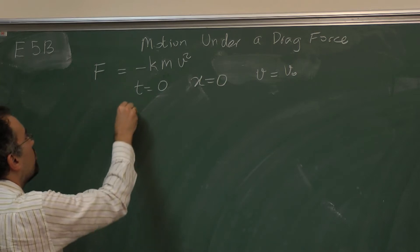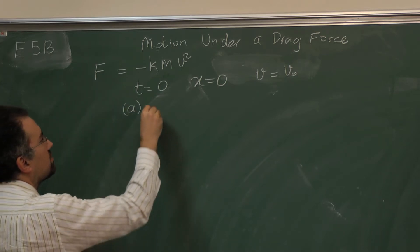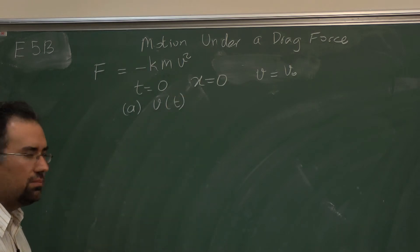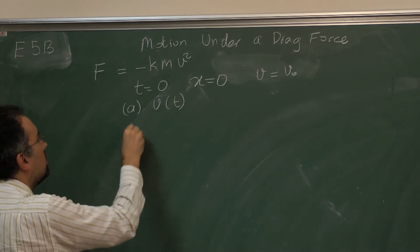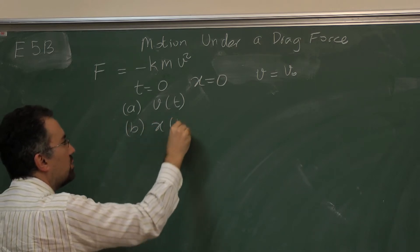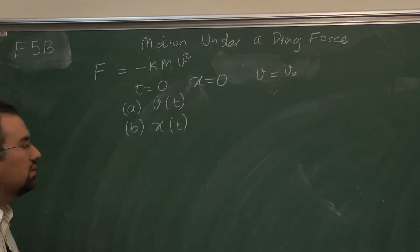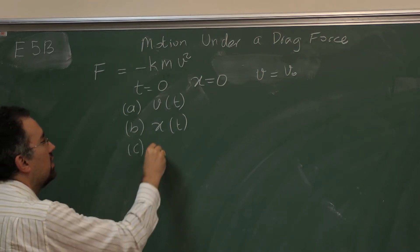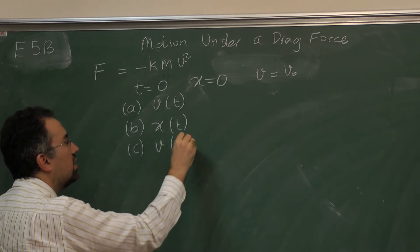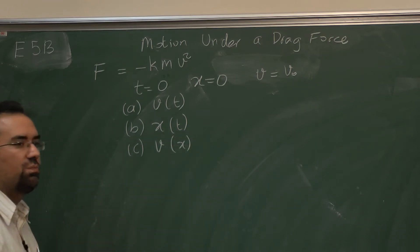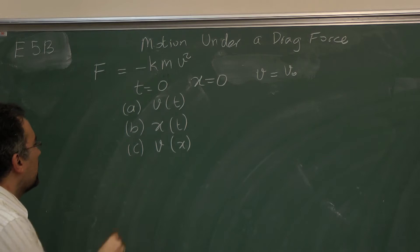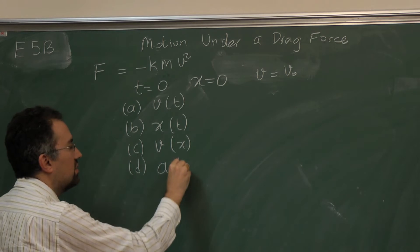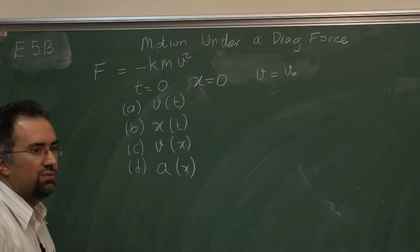And we're supposed to find the subsequent motion. So we have four things to find. One is the speed as a function of time. The second is the position of the object as a function of time. Part c asks for the speed of the object as a function of position.